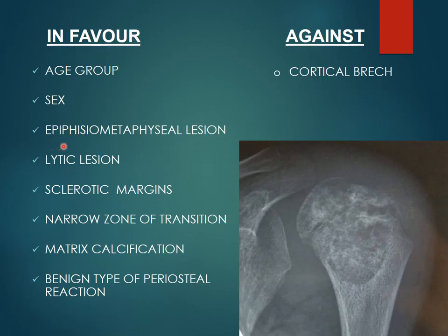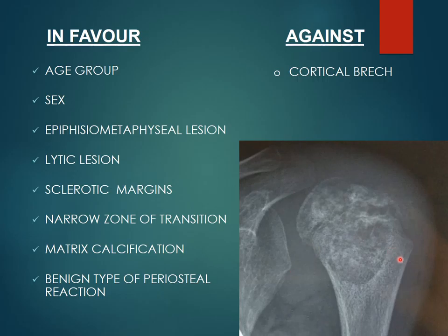The lesion of chondroblastoma is usually present in the epiphysis but can extend into the metaphysis — an epiphysio-metaphyseal lesion — as in our case. Chondroblastoma presents as a lytic lesion with sclerotic margins and narrow zone of transition, all of which are seen in our case. Matrix calcification — punctate, chondroid-type — is also seen in chondroblastoma and can be identified in our case.